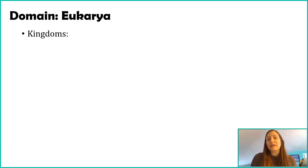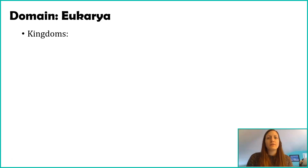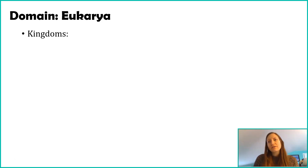Just to put us in a frame of reference, we are in the domain Eukarya — these are eukaryotic cells. There are four major kingdoms in the domain Eukarya, and I'm going to briefly introduce each of those kingdoms. We're going to explore these a lot more in this class, but I want to introduce them now to provide context around our definition for protists.